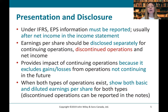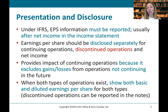Under IFRS, EPS information must be reported, usually after net income on the income statement. Earnings per share should be disclosed separately for continuing operations, discontinued operations, and net income. This provides the impact of continuing operations because it excludes gains or losses from operations not continuing in the future. That's why we show EPS for continuing operations separately from discontinued operations.